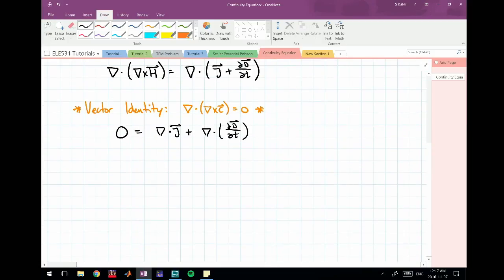Now I can take this divergence of J onto the left side, and this becomes negative. And let's take this divergence on the derivative term inside the derivative and pull the derivative out.